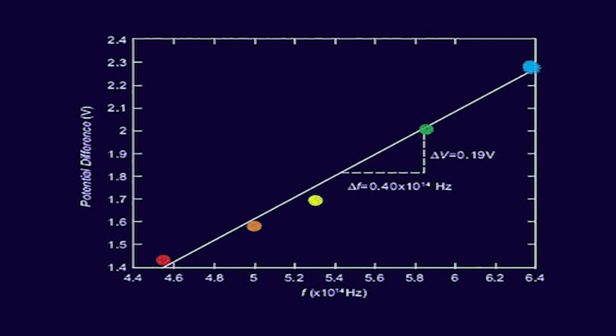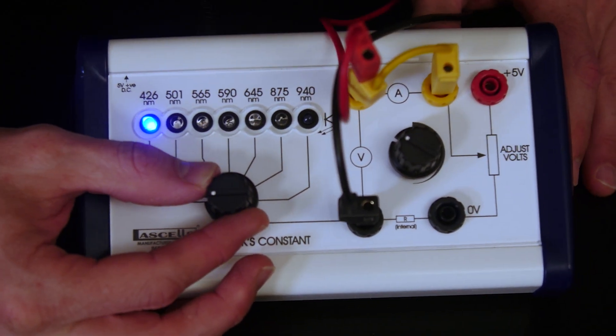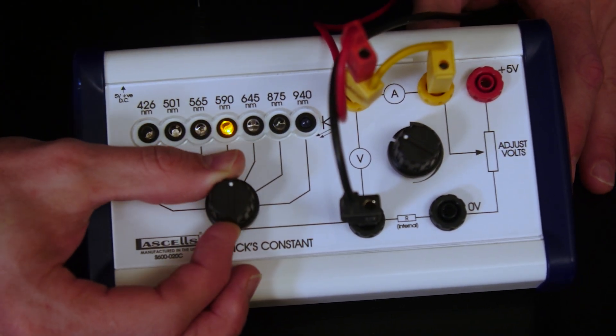The results of this experiment are usually graphed, and the slope of that graph is Planck's constant. What this means is different frequencies of light require different amounts of energy. Blue light requires more voltage or electron volt energy than would infrared light.